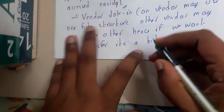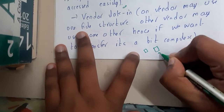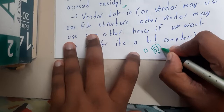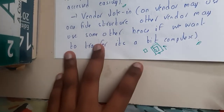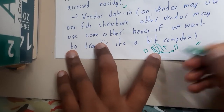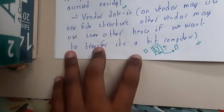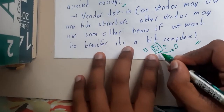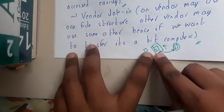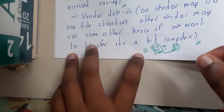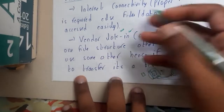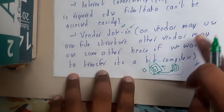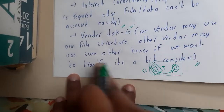Vendor lock-in is a concept where, assume you started a business and took hosting space with a small company. Your company grew, and now this service provider cannot fulfill your requirements, so you want to move to another cloud provider. But if the provider is not allowing you to move — due to contracts — or if their file structure is completely different from another provider's, you cannot directly migrate from one cloud provider to another. This difference in file structures and formats is called vendor lock-in. One vendor may use one file structure and another vendor may use a different one, making file transfer complex.